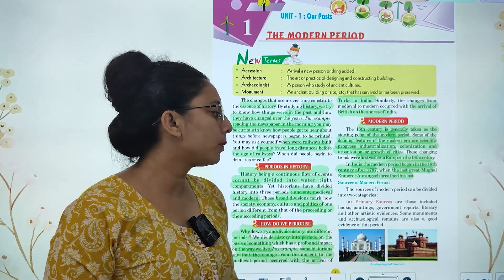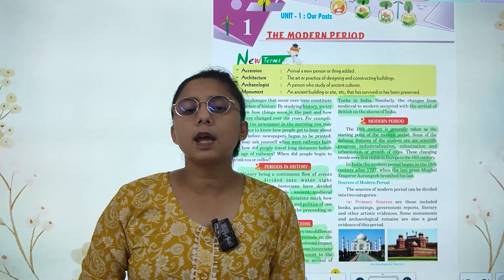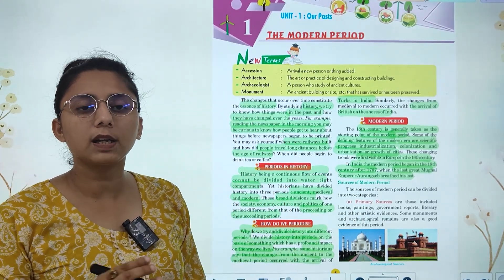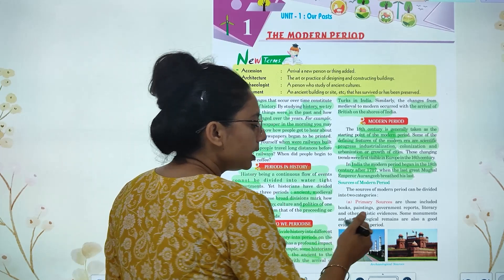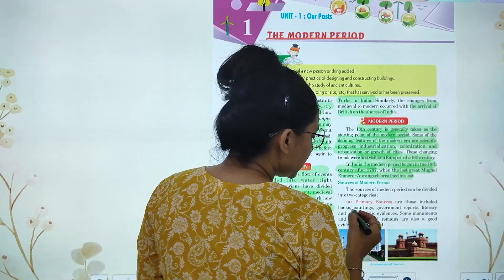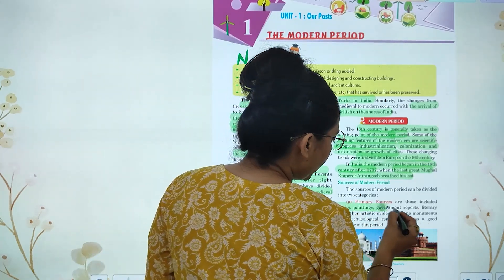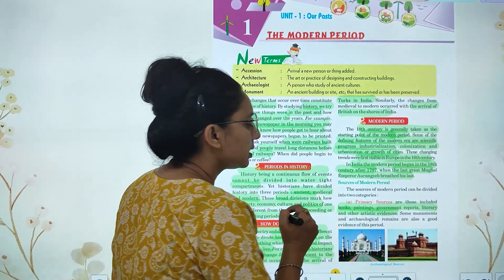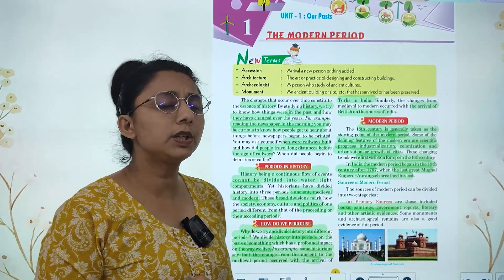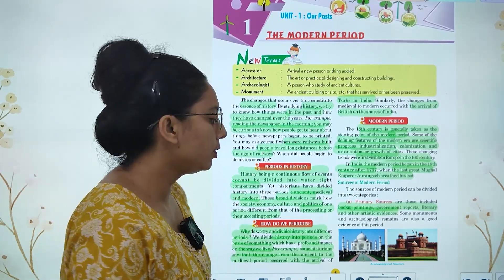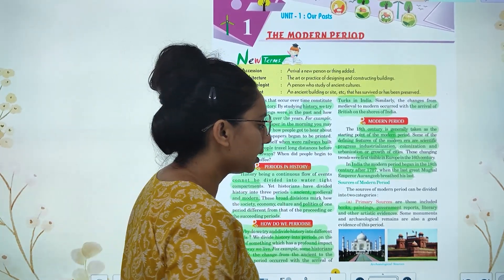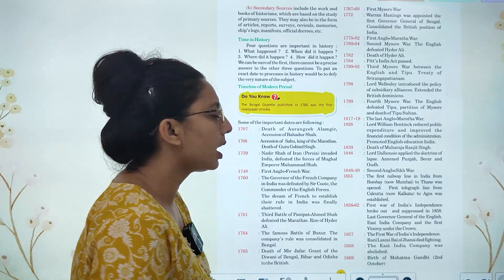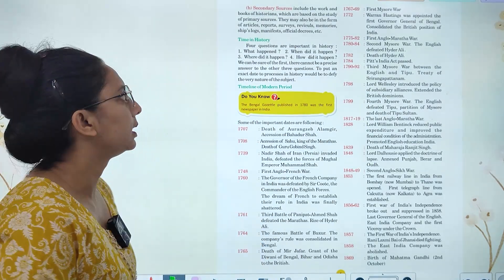Next are sources. In the modern period, sources are divided into two parts. First, primary sources: these include books, paintings, government reports, literary and other artistic evidence. Monuments and archaeological remains are also the most important evidence in this period.